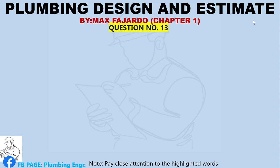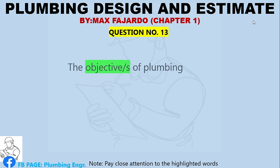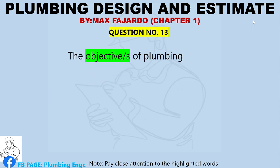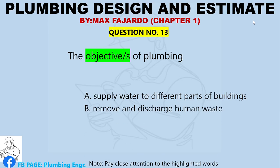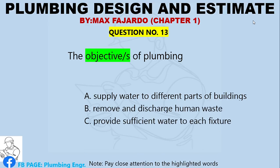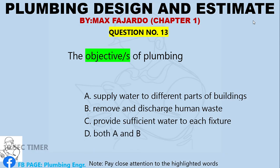Question Number 13. What are the objectives of plumbing? A. Supply water to different parts of buildings. B. Remove and discharge human waste. C. Provide sufficient water to each fixture. D. Both A and B.